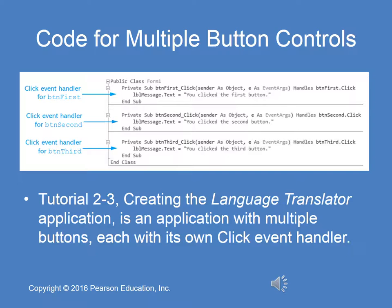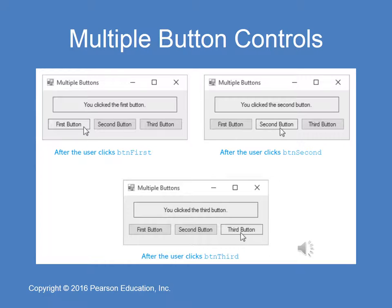Here we have the code for multiple buttons — a continuation of the previous slide. We have click event handlers for three buttons: btnFirst, btnSecond, and btnThird, with names obviously changed from the default system-assigned names. Each handler simply changes labelMessage.Text to "You clicked the first button," "You clicked the second button," or "You clicked the third button," depending on which button was selected. The screen prints show how the label text changes based on which button was clicked.